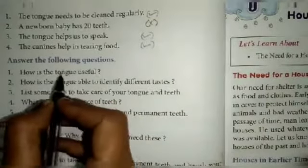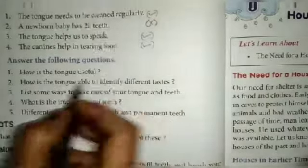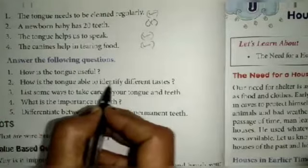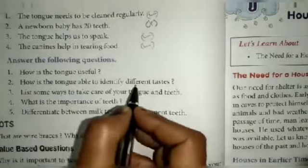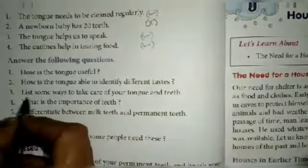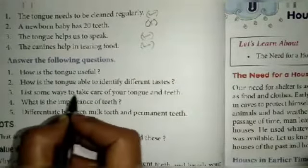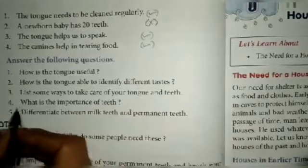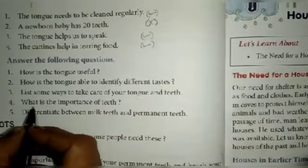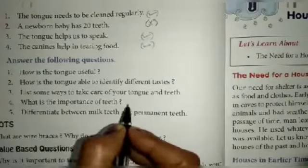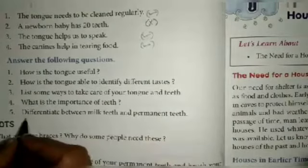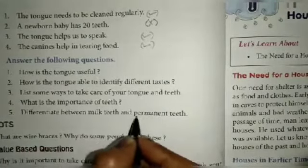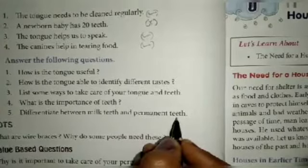First question is how is the tongue useful? Second question is how is the tongue able to identify different tastes? Third question is list some ways to take care of your tongue and teeth. Fourth question is what is the importance of teeth? Fifth question is the difference between milk teeth and permanent teeth.